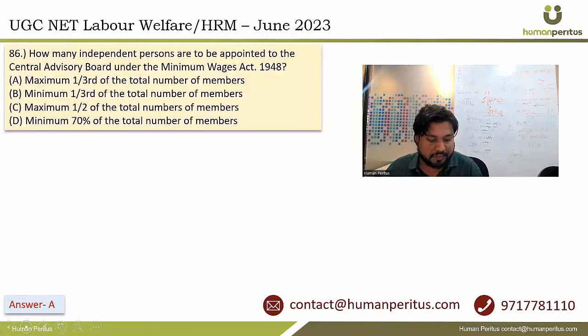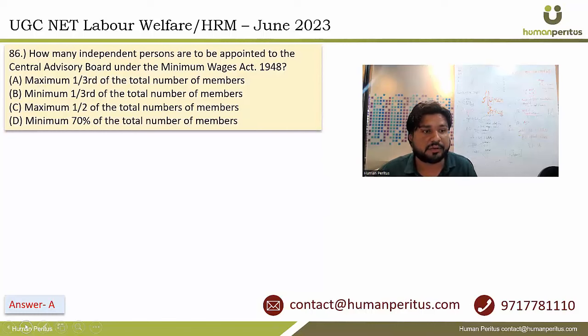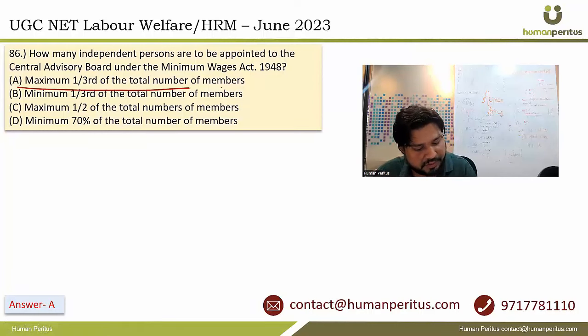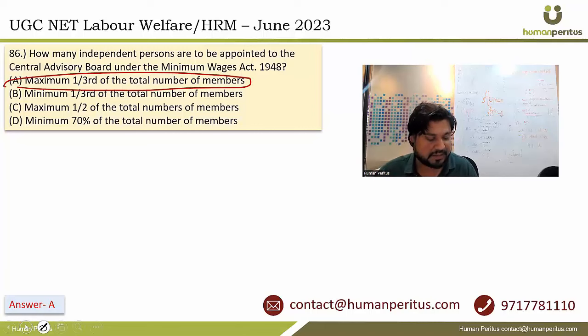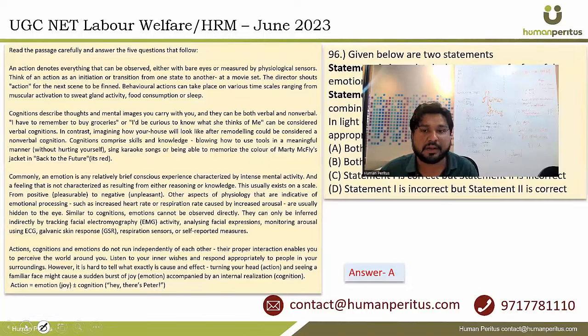Independent persons appointed in the Central Advisory Committee are maximum one-third of the total number of members. So option A is the correct answer.